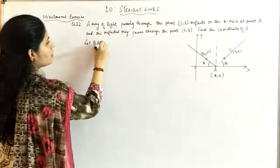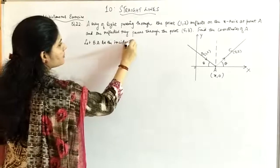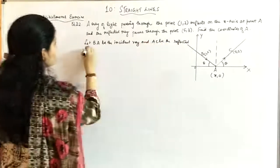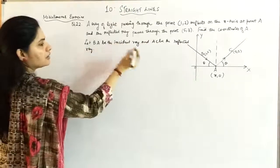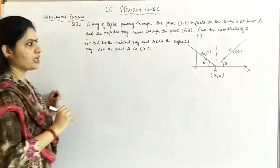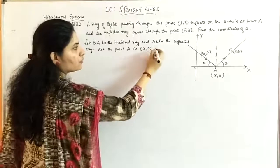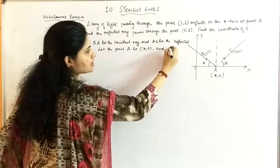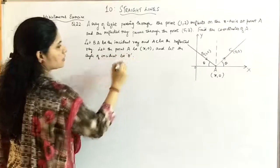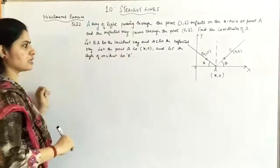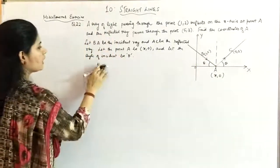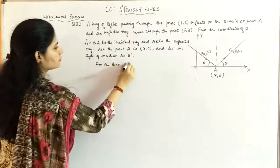Let B(1, 2) and C(5, 3) be the given points. Let BA be the incident ray and AC the reflected ray, with A = (x, 0) on the x-axis. Taking the angle of incidence and angle of reflection both as θ. For line AC, tan θ = (y₂ - y₁)/(x₂ - x₁) = (3 - 0)/(5 - x) = 3/(5 - x).